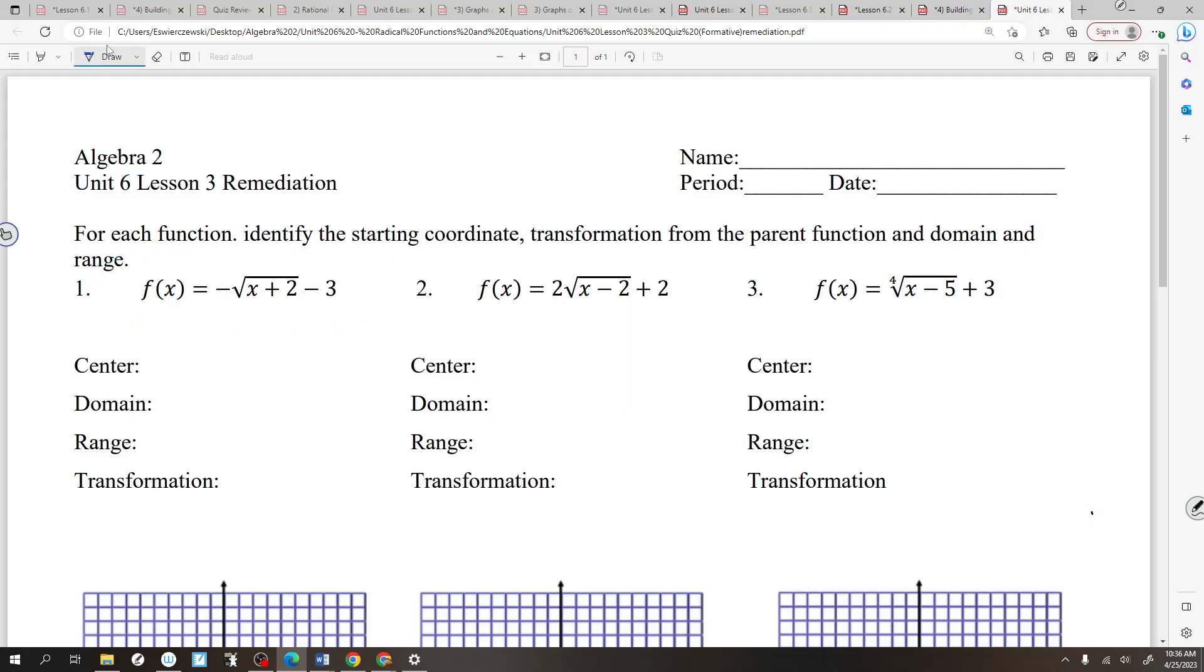If I look at this function, A would be negative 1. That means I'm going to have a reflection. So I'm just going to write that down already. H, anyone know what H would be? It would be negative 2. What would K be? Negative 3. N is 2. So it's going to look like a square root except upside down because it's reflected.